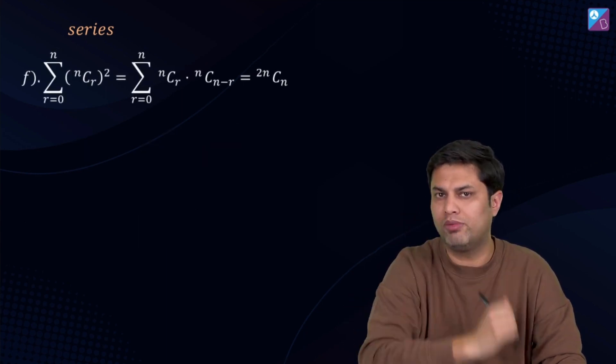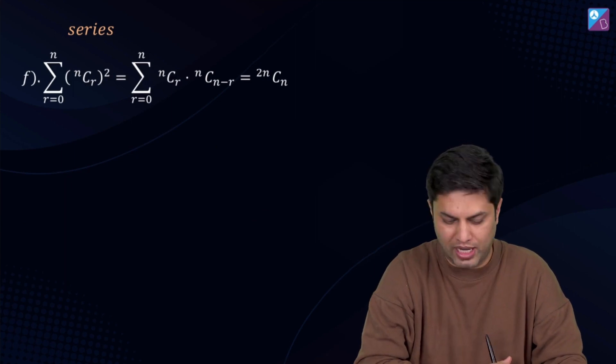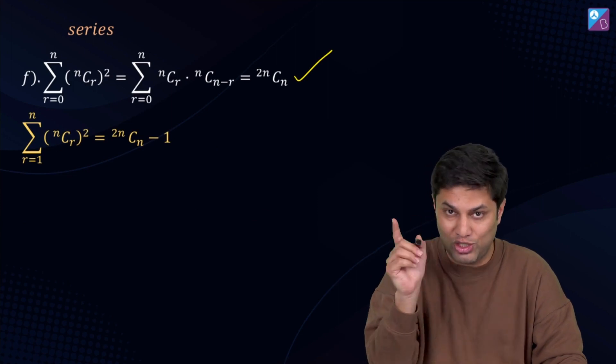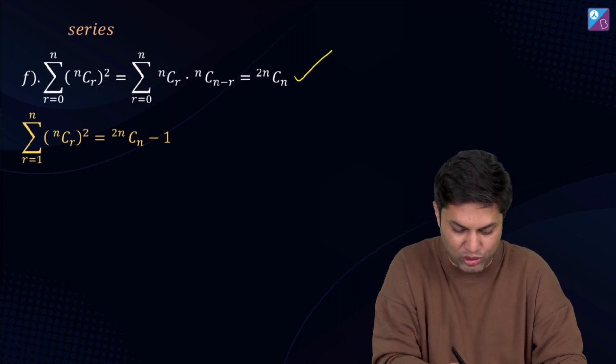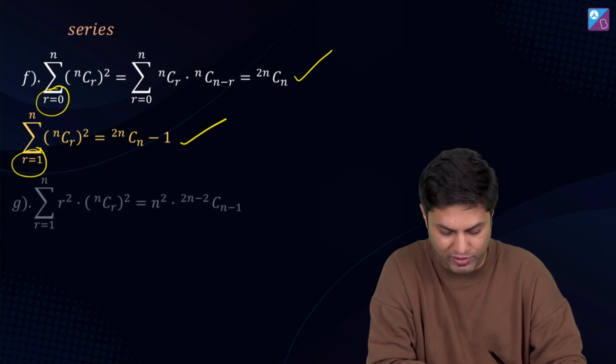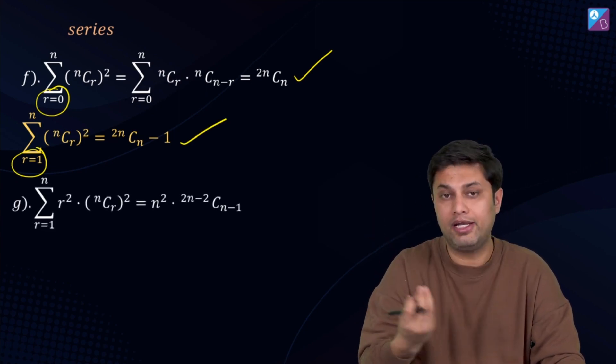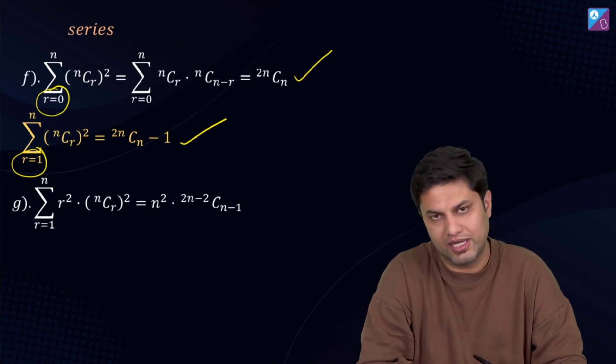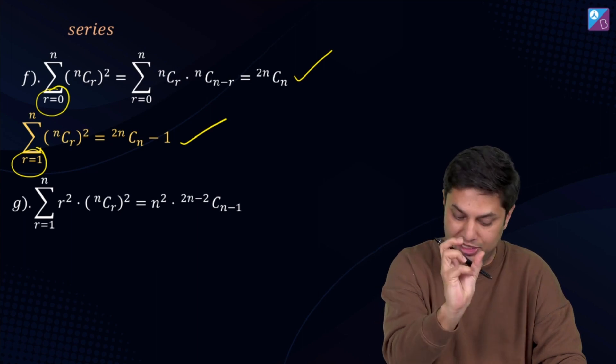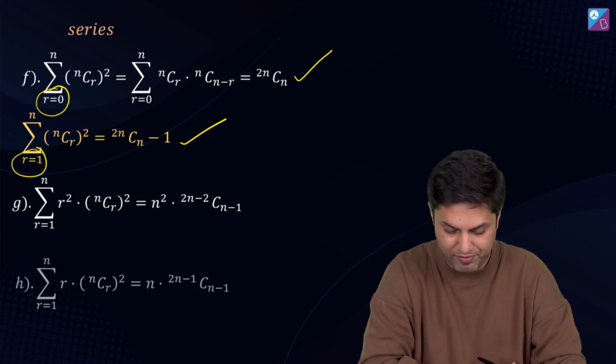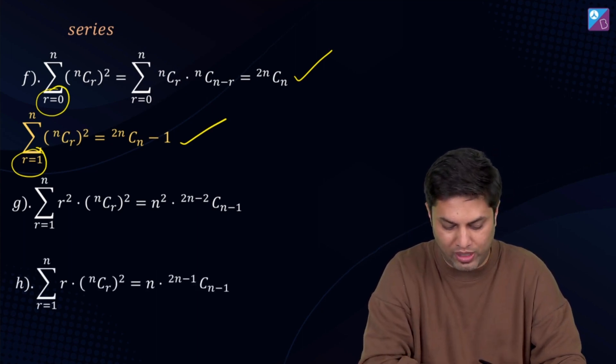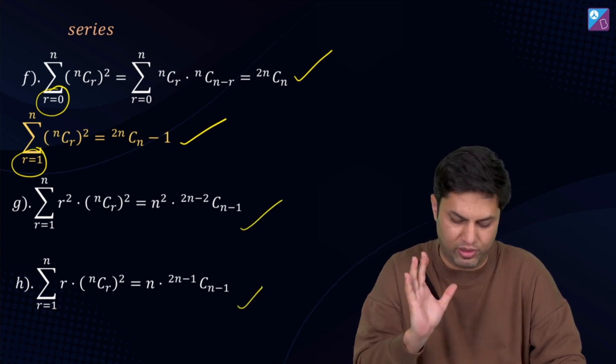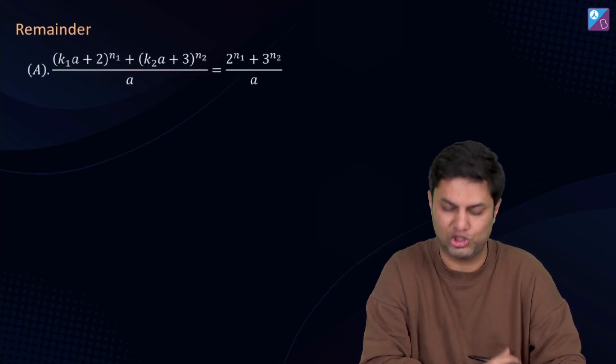nCr squared. There are two binomials multiplied. The answer is 2nCn. But if sigma starts with 1, then we have to minus. There is sigma difference here. This is 2nCn-1. r²·(nCr)² is n²·2n-2Cn-1. This is a very important series. This is r²·nCr² and r·nCr². And r·nCr² equals n·2n-1Cn-1. This is your series. Very very very important, which you have to keep your attention. Directly shortcut.